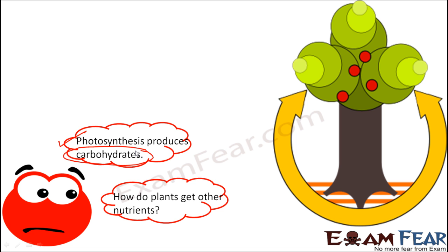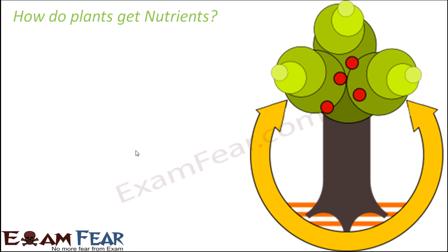But while we were talking about nutrients, we were talking about many other nutrients as well - for example, vitamins, minerals, proteins, carbohydrates, and so many other things. So how do plants get the other nutrients? Because photosynthesis is only able to provide carbohydrates. What about other nutrients?